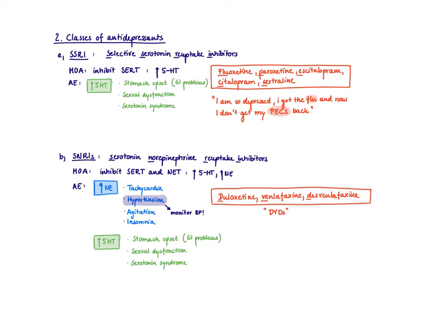The next class are the SNRIs - serotonin norepinephrine reuptake inhibitors. They inhibit both the serotonin reuptake transporter and the norepinephrine transporter, so you're going to increase both serotonin and norepinephrine levels, and therefore have all the corresponding side effects. It is recommended to monitor blood pressure regularly with SNRIs, as they really can increase blood pressure - you should definitely not put somebody with uncontrolled hypertension on an SNRI. Examples are duloxetine, venlafaxine, and desvenlafaxine - sometimes called the DVD drugs.